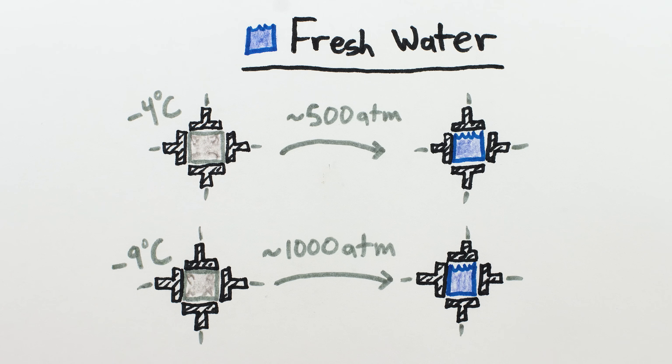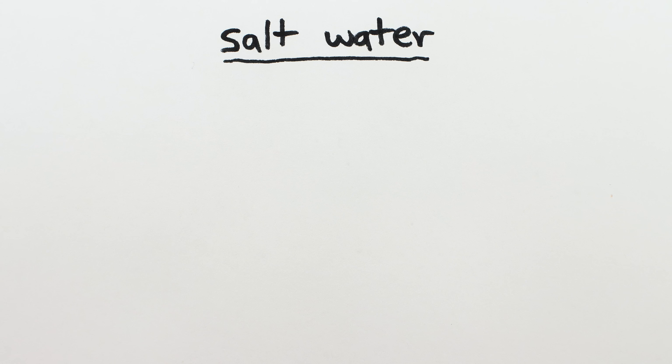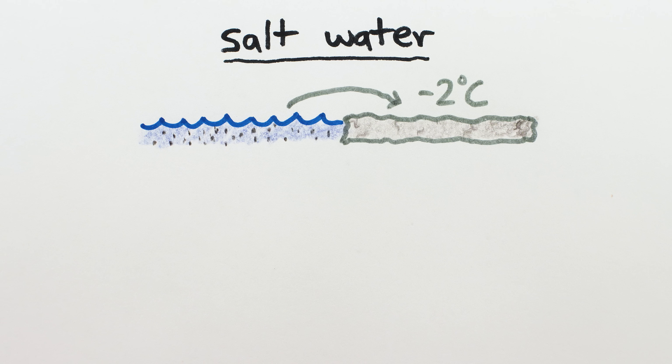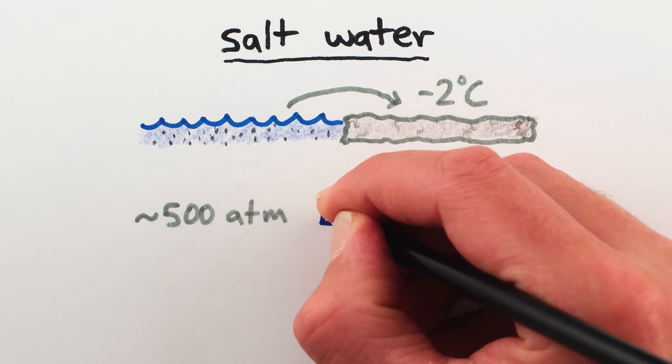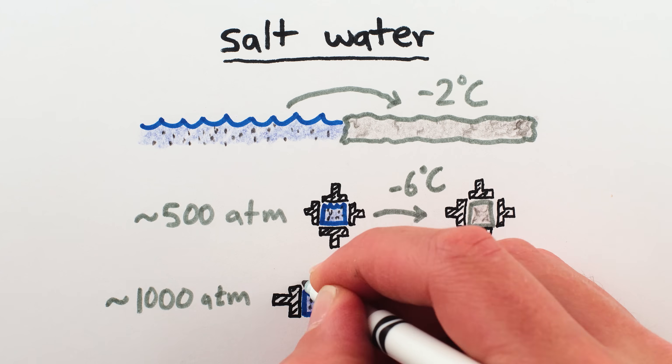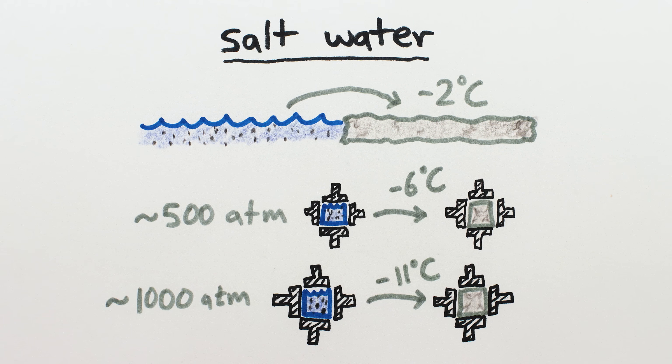But that's for freshwater. For salty seawater, everything more or less gets shifted colder. On the ocean's surface, saltwater doesn't freeze until around 2 degrees Celsius below zero. At 500 times atmospheric pressure, saltwater doesn't freeze until around 6 degrees Celsius below zero. And at the bottom of the Mariana Trench, saltwater wouldn't freeze until around 11 degrees below zero.